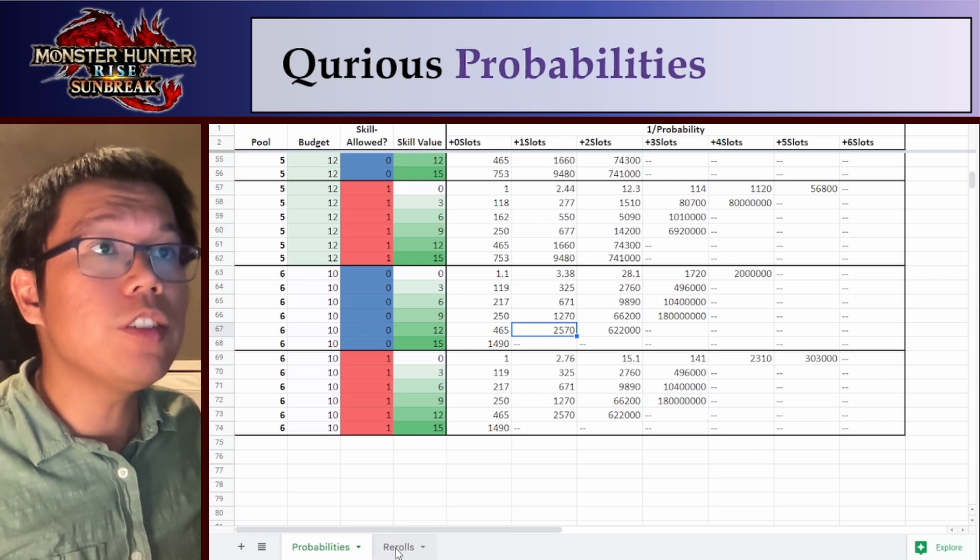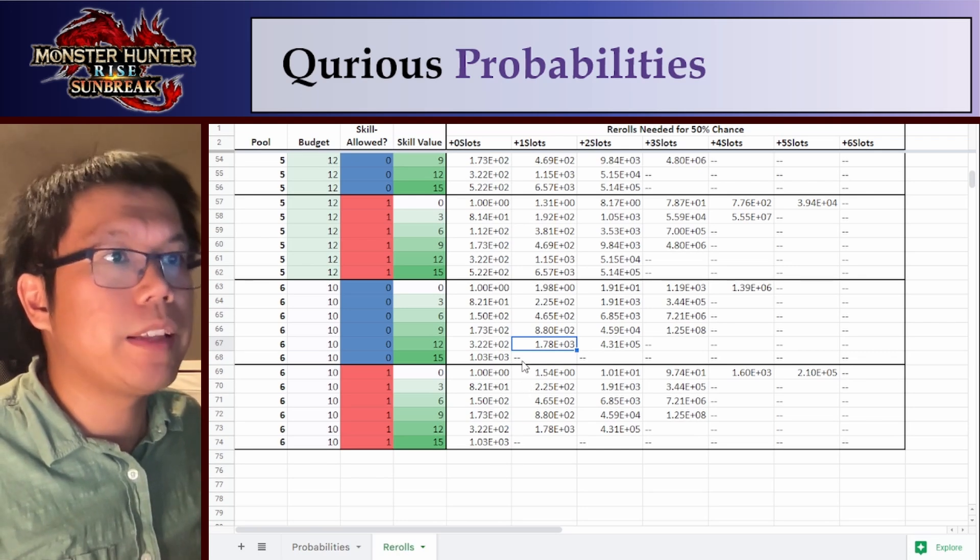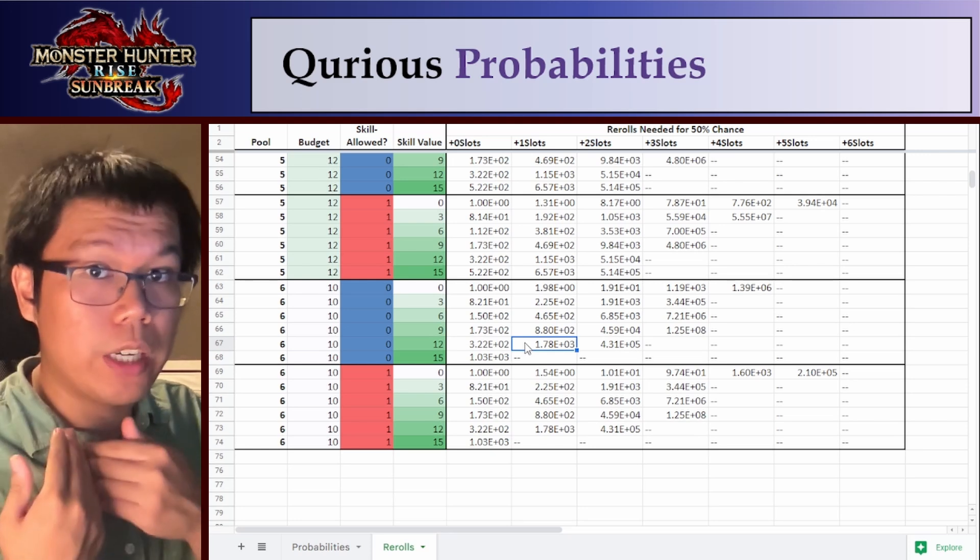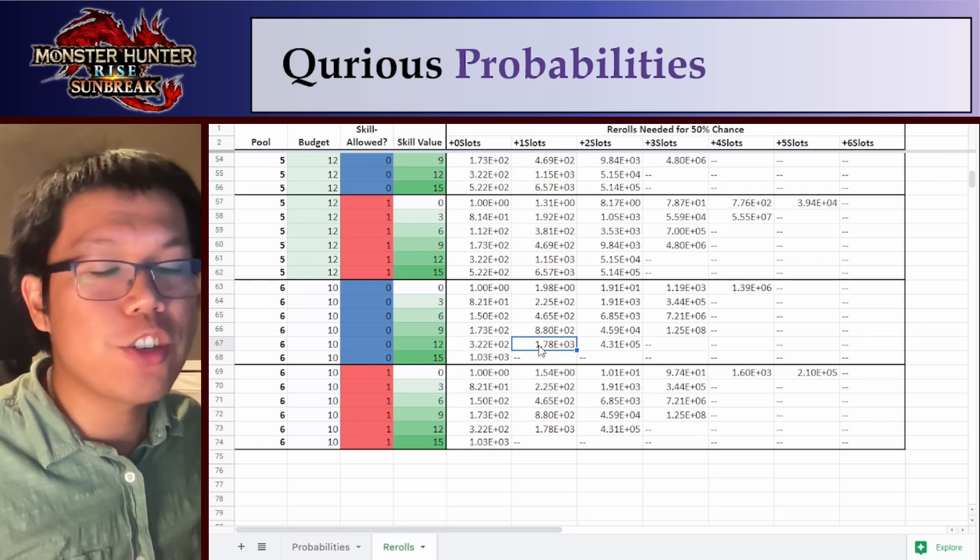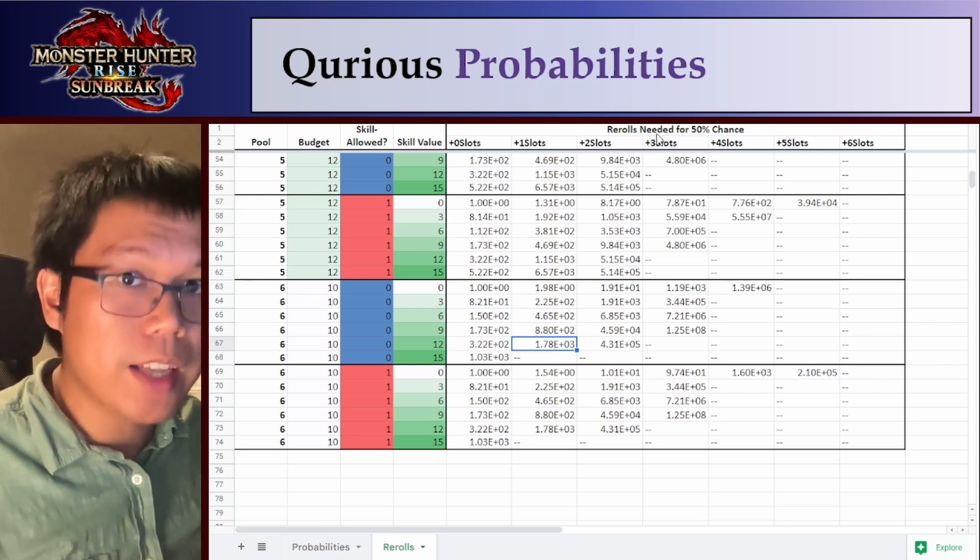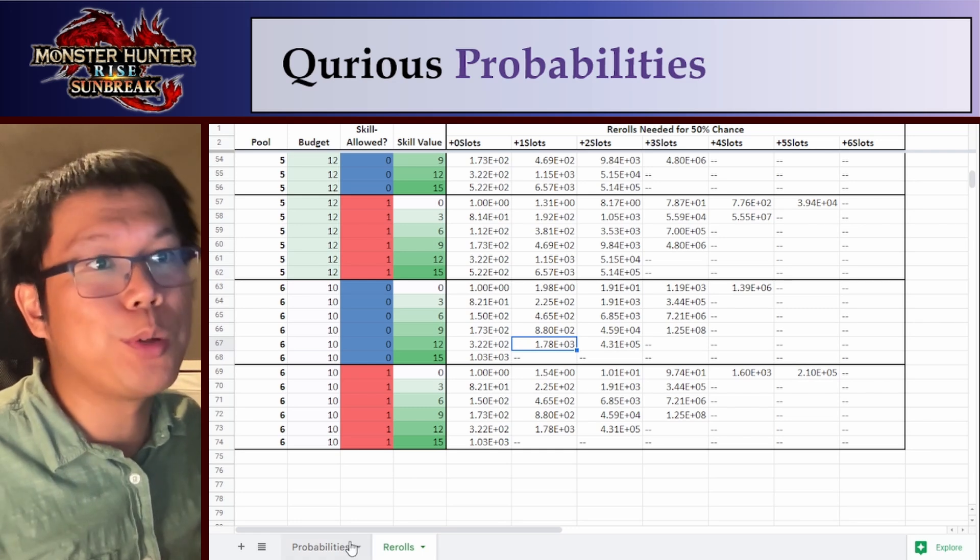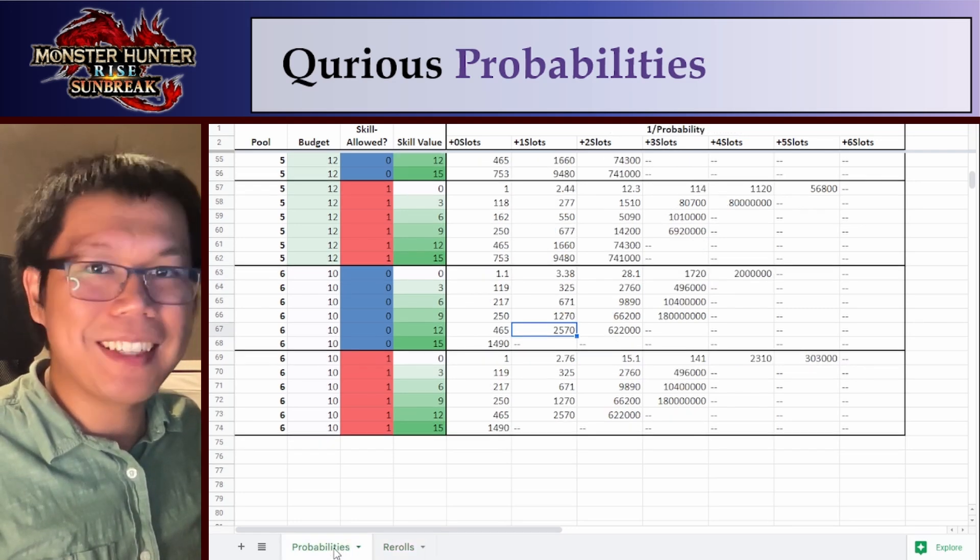In this second sheet, we have basically how long it'll take you to get the augment you want. Basically, this is how many attempts you need for a 50% chance of getting it. So it'll take you 1780 rolls to get a 50% chance of getting the armor augment we want. And yeah, that's basically it. That's basically the video.